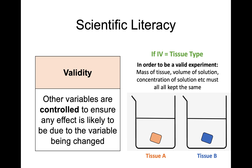So anytime you're asked a question on validity, you need to look at everything else that must be kept the same, must be controlled, and must be kept fair in order to carry out a valid experiment. The independent variable is the only part that should be different. Hope you found that useful and that it answers any questions you have on validity.